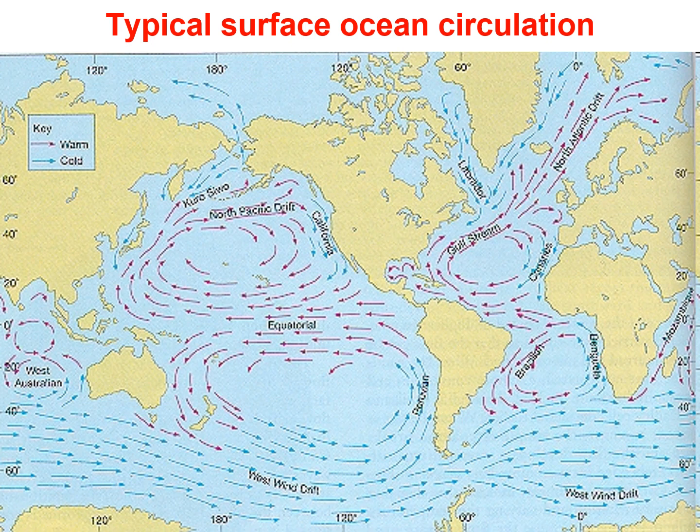Along the west coast of South America, the cool Peruvian current sweeps northward and southerly winds promote upwelling of cold, nutrient-rich water that gives rise to large fish populations, especially anchovies. The abundance of fish supports a large population of seabirds whose droppings, called guano, produce huge phosphate-rich deposits which support the fertilizer industry. Near the end of the calendar year, a warm current of nutrient-poor tropical water often moves southward, replacing the cold surface water. Because this occurs around Christmas, local residents call it El Niño.